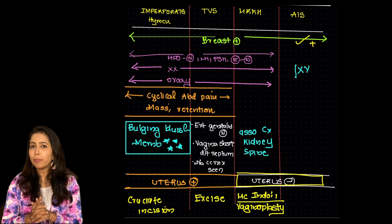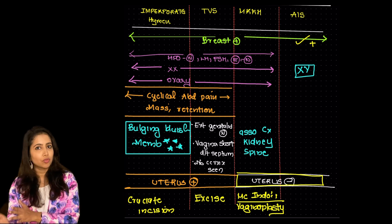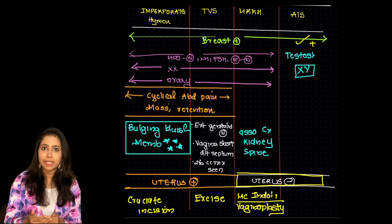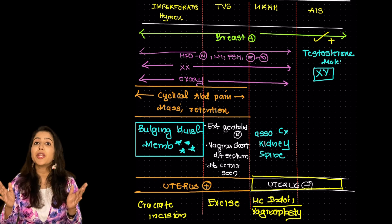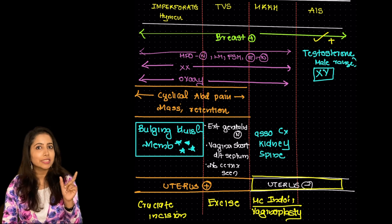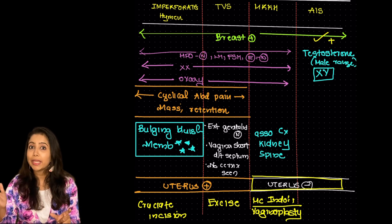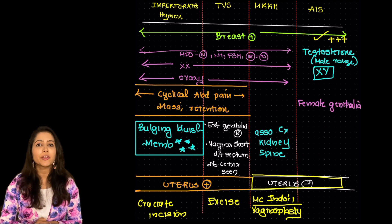So what happens in this is as the name suggests there is androgen insensitivity syndrome. Though they are males they are XY they are producing androgens but the tissues are not sensitive to this androgen. So as we studied in the beginning androgen is responsible for the development of male external genitalia. So the external genitalia is going to be that of a female.